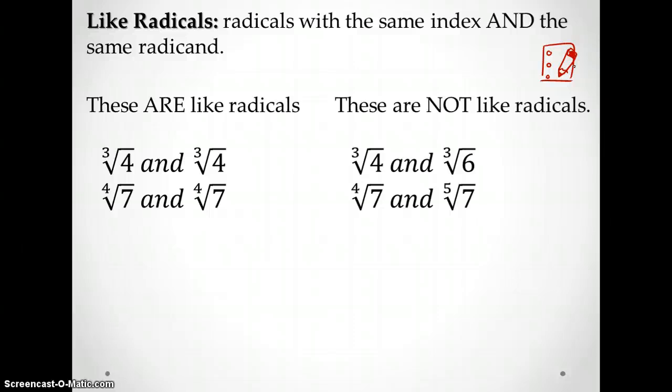So here's a couple of examples. The cube root of 4 and the cube root of 4. These are like radicals. These are not. The cube root of 4 and the cube root of 6. These have the same index, but not the same radicand. So they are not like radicals. The 4th root of 7 and the 4th root of 7. Those are. The 4th root of 7 and the 5th root of 7. Here the radicand is the same, but the index is not. So these are the ones that don't work as far as being like radicals.